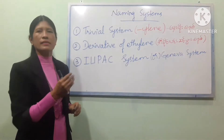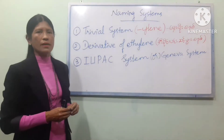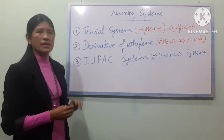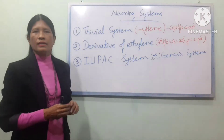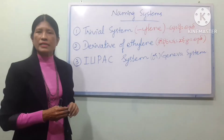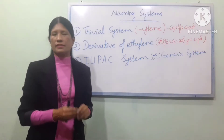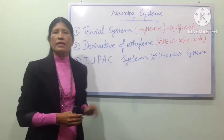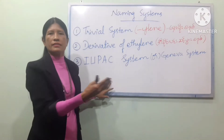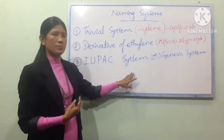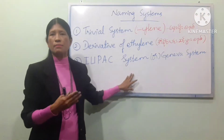For example, using the IUPAC or Geneva system, you start by identifying the number of carbons and the position of the double bond — there are four main classes.